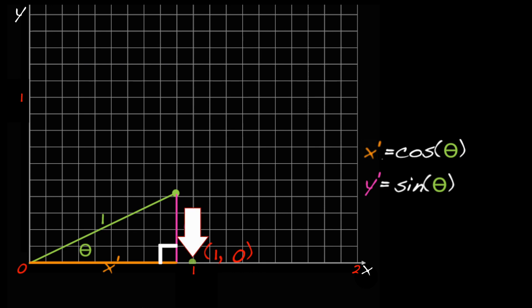This tells us that the point (1, 0) gets rotated to the point (cosine theta, sine theta). Use the next exercise to get some practice with these ideas.